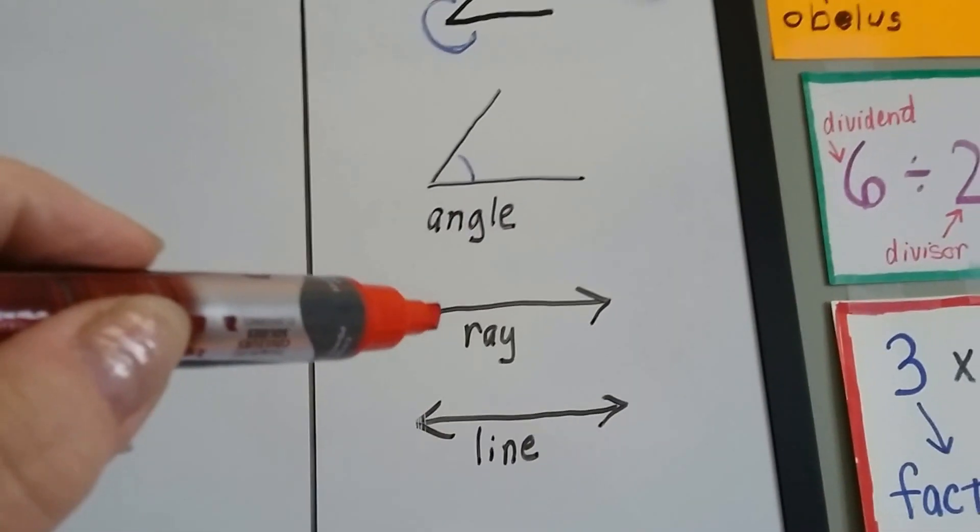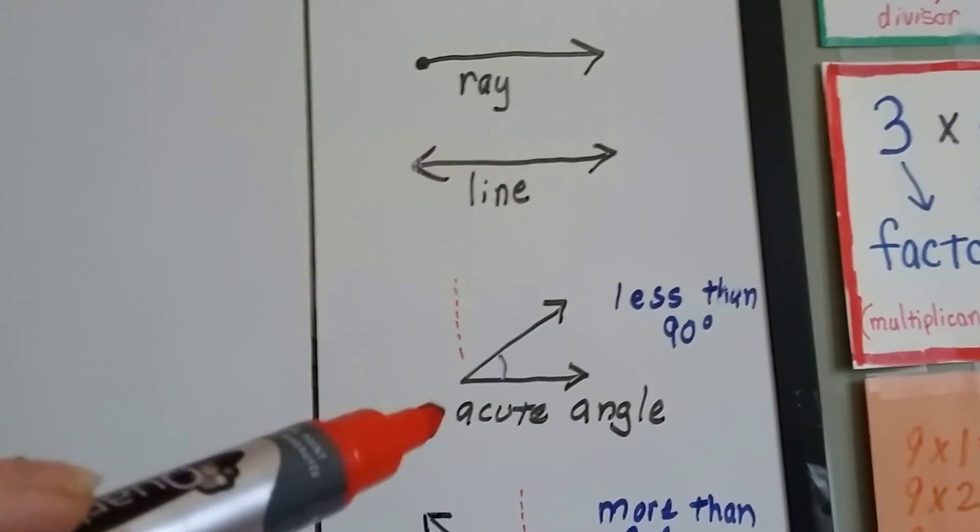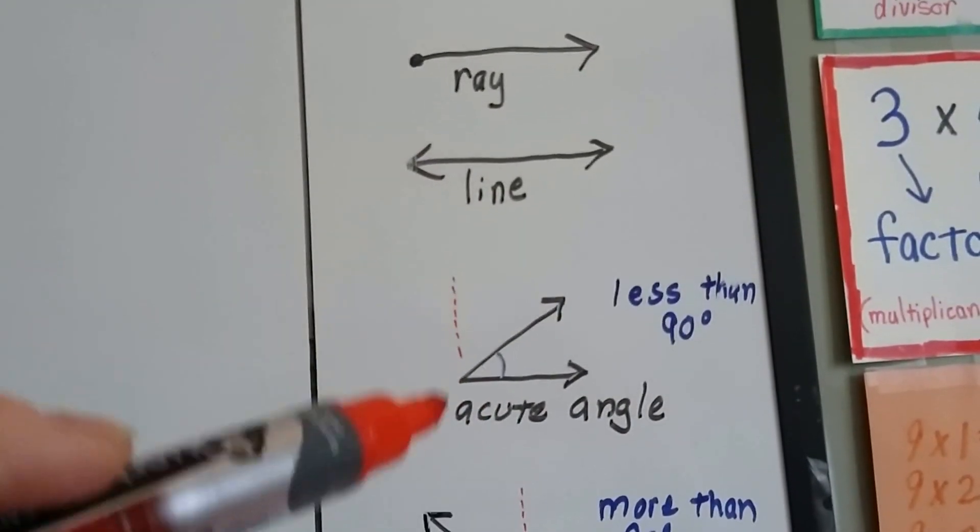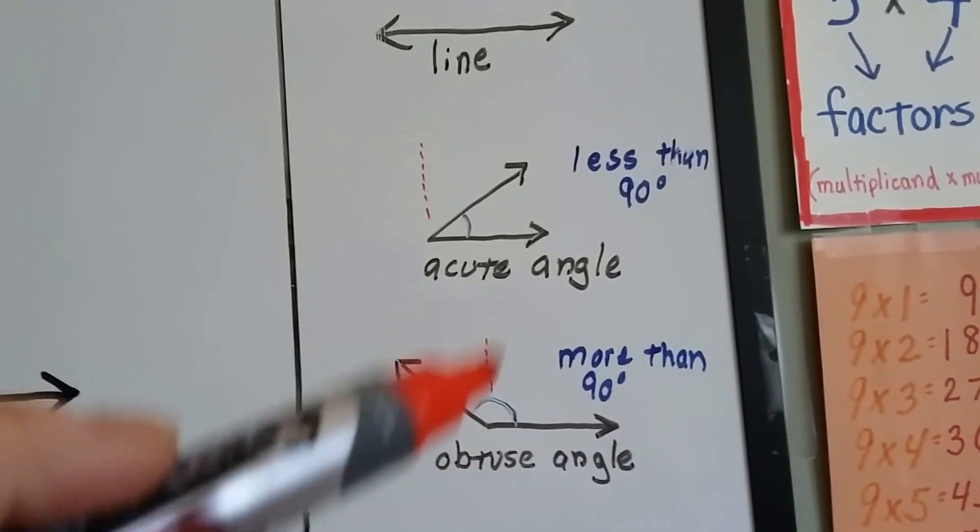Here's a ray. It's got a point with an arrow at the end. A line has two arrows. Here's an acute angle that's less than 90 degrees. See? Here's an obtuse angle that's more than 90 degrees.